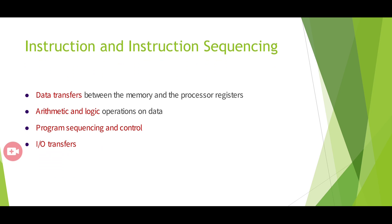Next, what is an instruction? An instruction is a special command given to the system. We use instructions for data transfer, arithmetic and logical operations, program sequencing and control, and for input-output transfers. All these purposes require instructions or instruction sequencing.